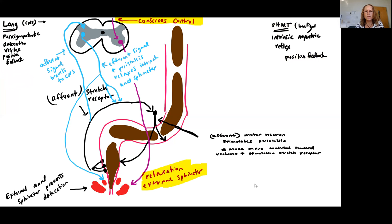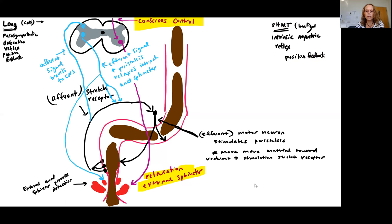So here we see that we've had conscious awareness of this movement of material into the rectum, which is going to signal our conscious control. We're going to have a motor neuron synapsing onto the external anal sphincter allowing for defecation to occur.